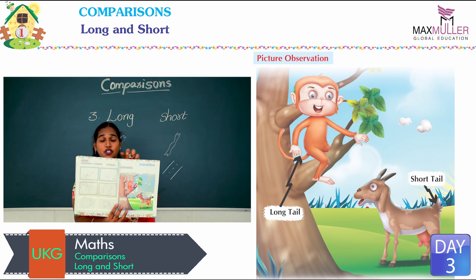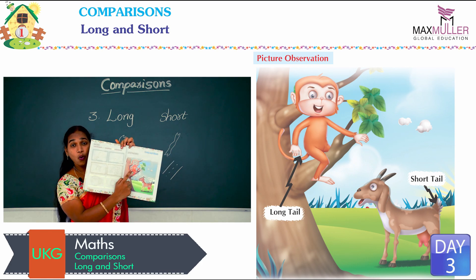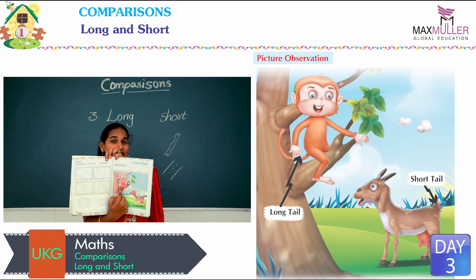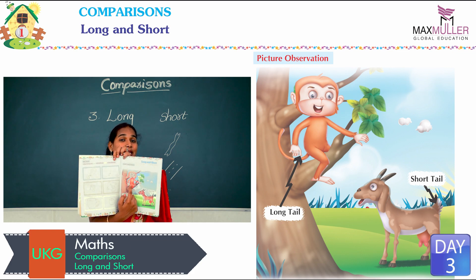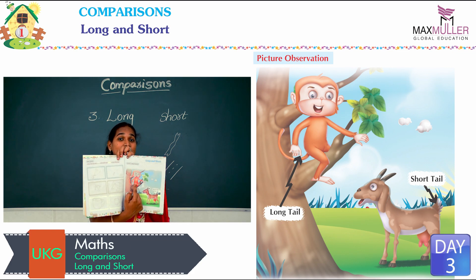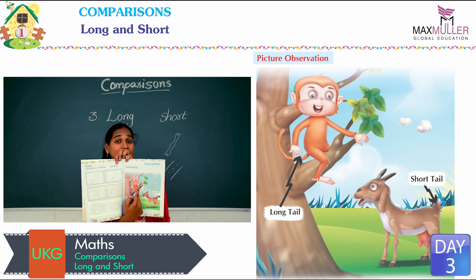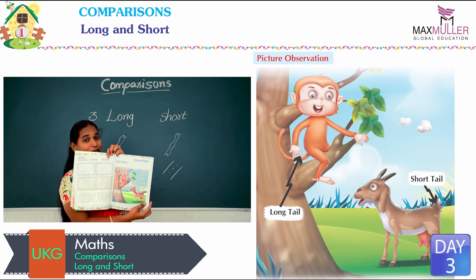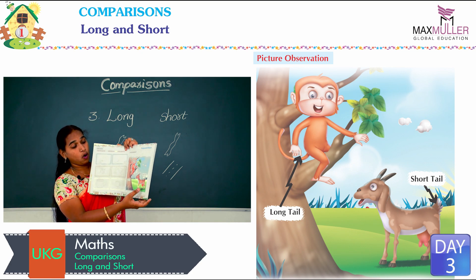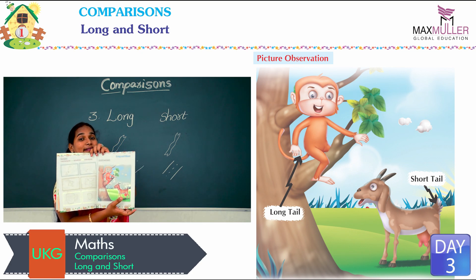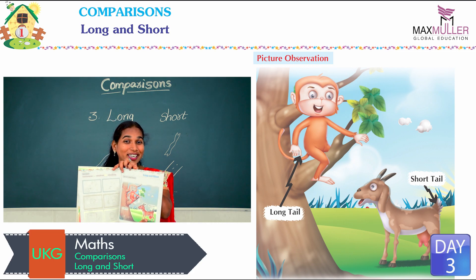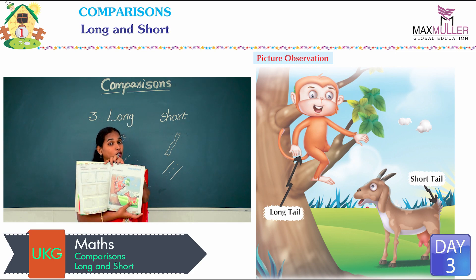See here, children. What is this animal? This one is a monkey. And see down — another animal is there. What is this animal? This animal is a goat.